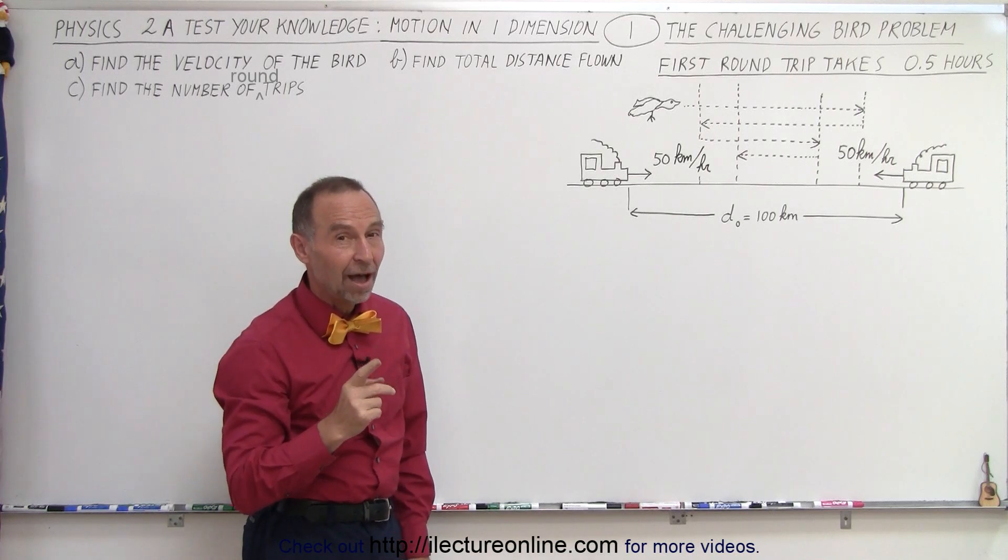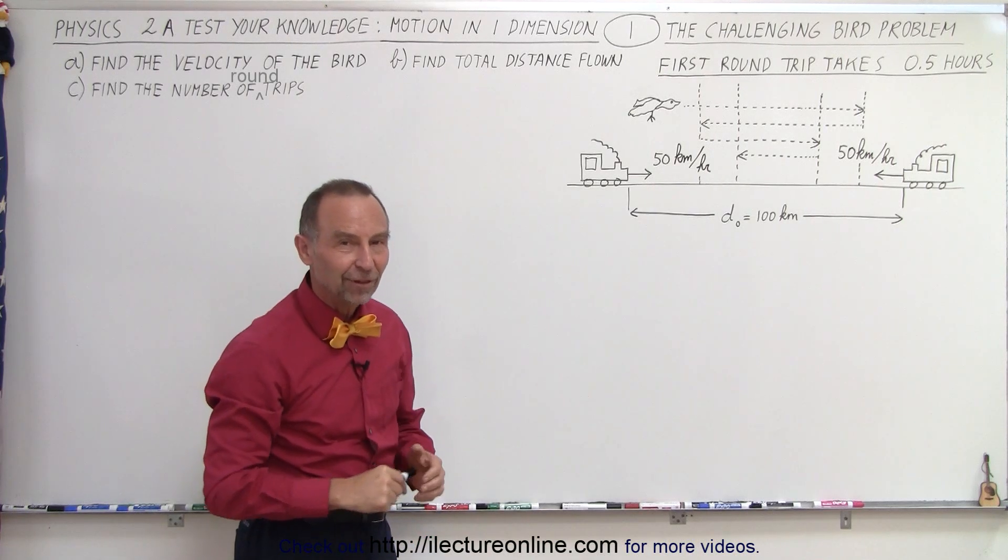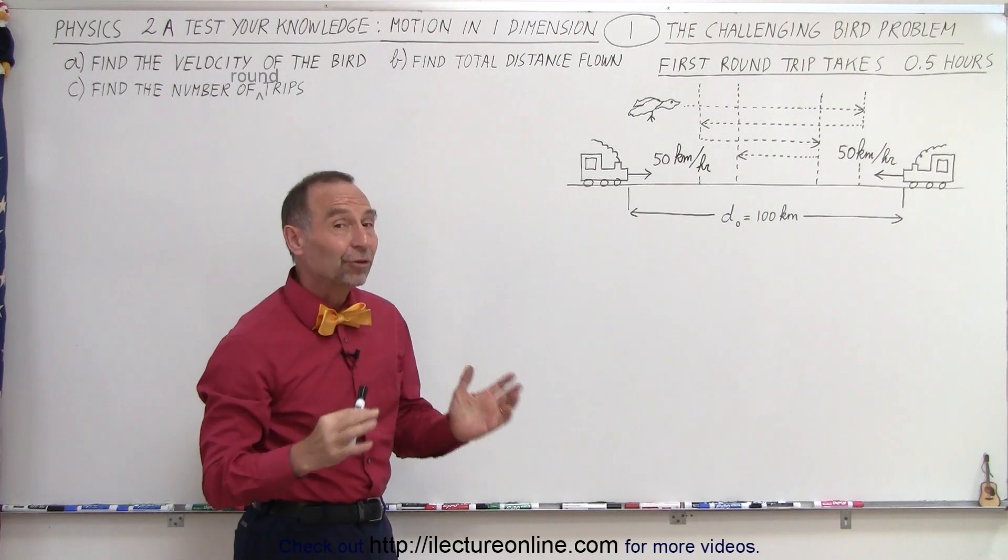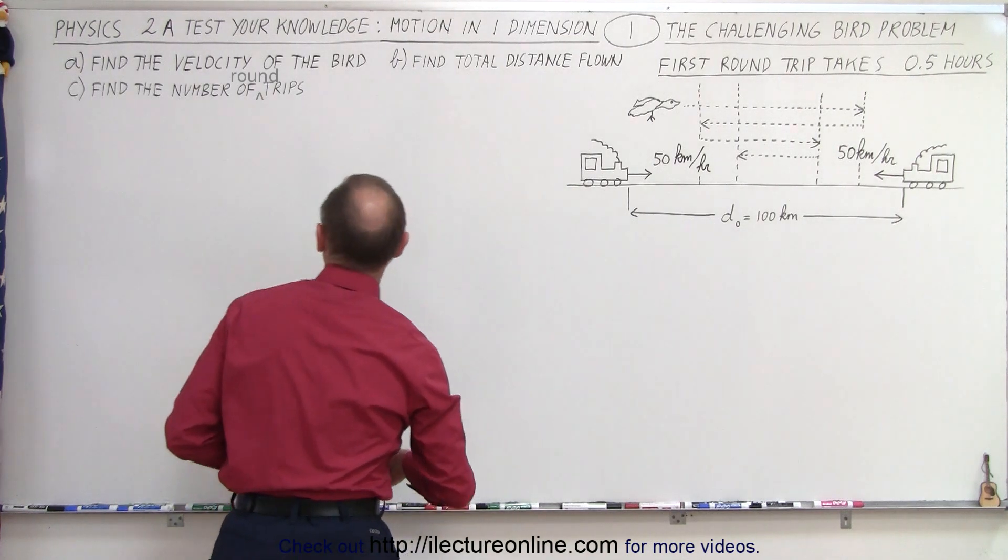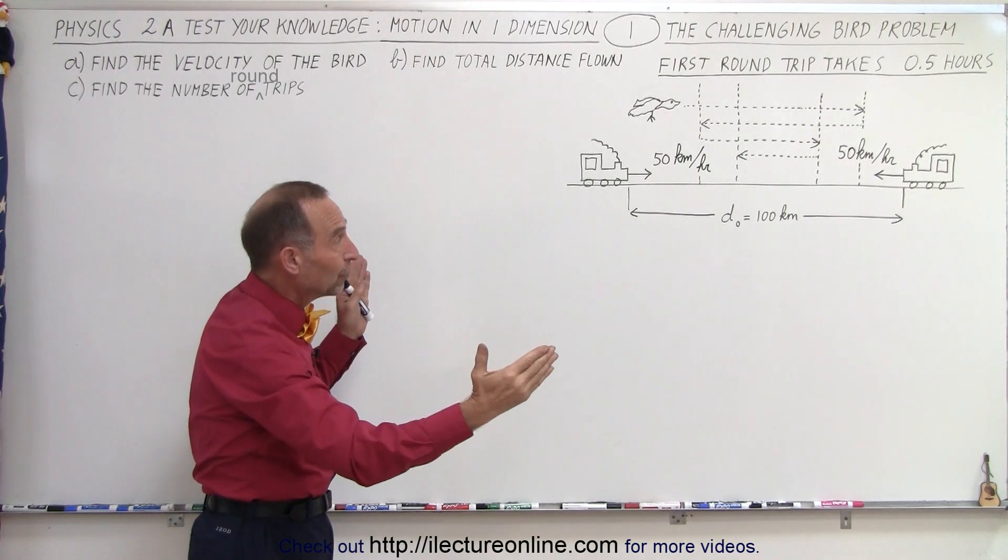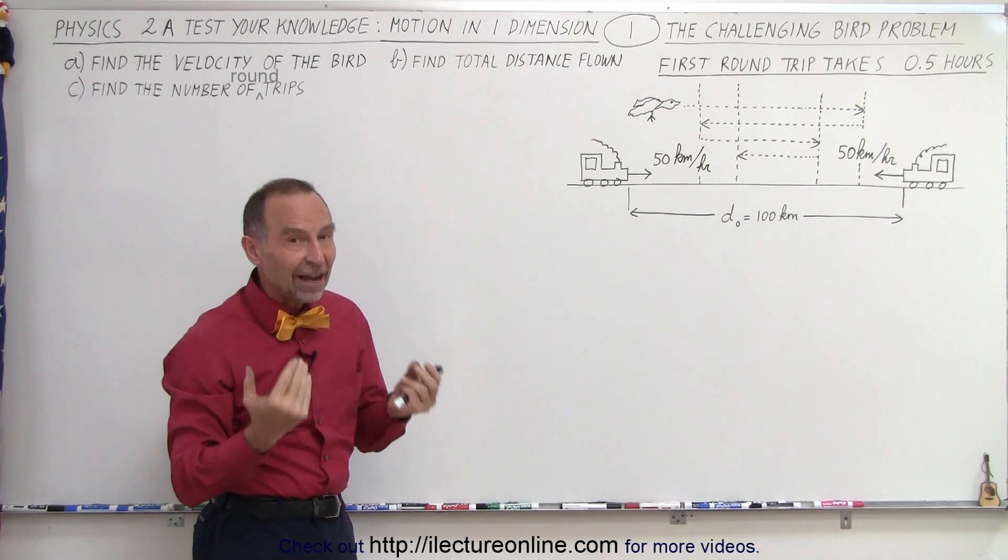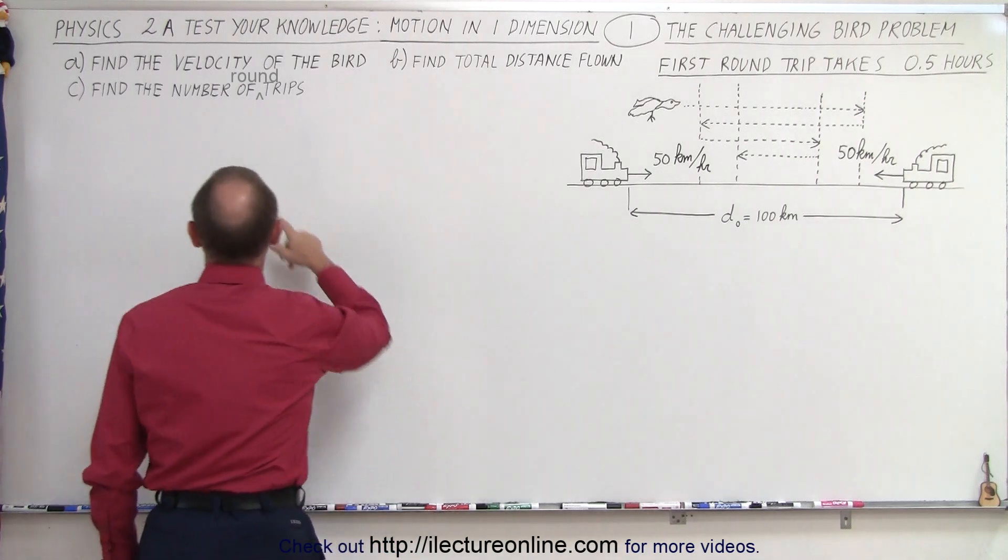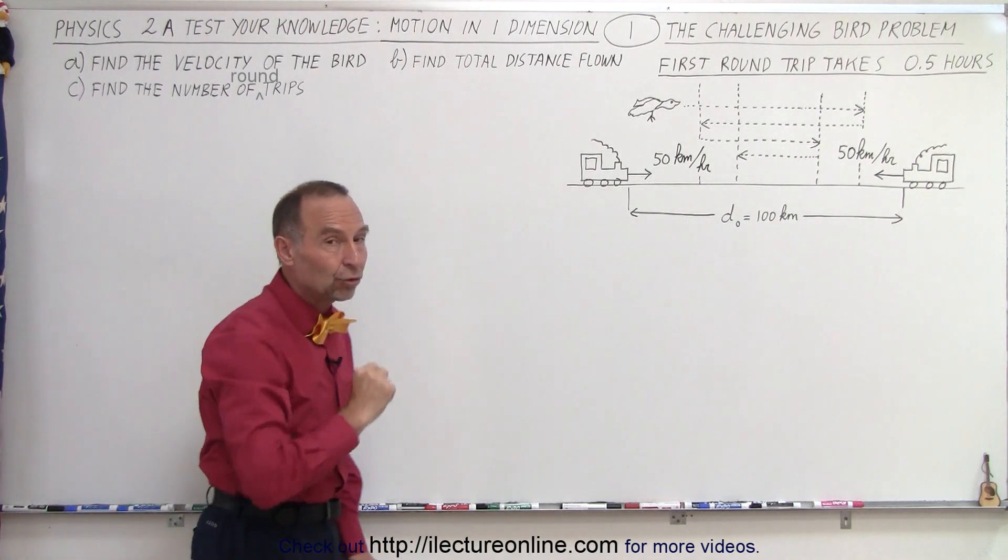The question is how fast did the bird fly? Well, that's the first question. There's a second question, find the total distance flown by the bird by the time the two trains meet, and finally, the more challenging question perhaps, find the number of round trips.